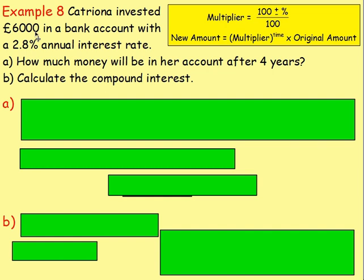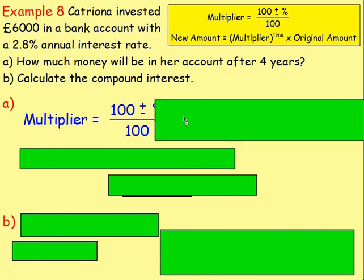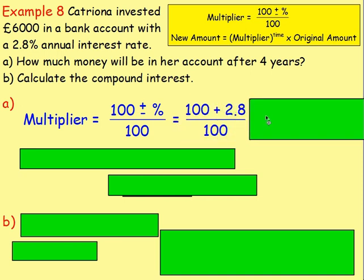Year two is going to be 2.8% of however much money will be in her account after that first year. And then for the following year, again it's 2.8% of that — so it's going to keep increasing. The quick way of working it out is to use multipliers. For our multiplier, we always start at 100, we add or take away our percentage, and then divide by 100. For all of these interest rates, the banks are giving you free money, so you're going to be adding the percentage on. With this one, we start at 100, add on the 2.8, and then divide by 100.